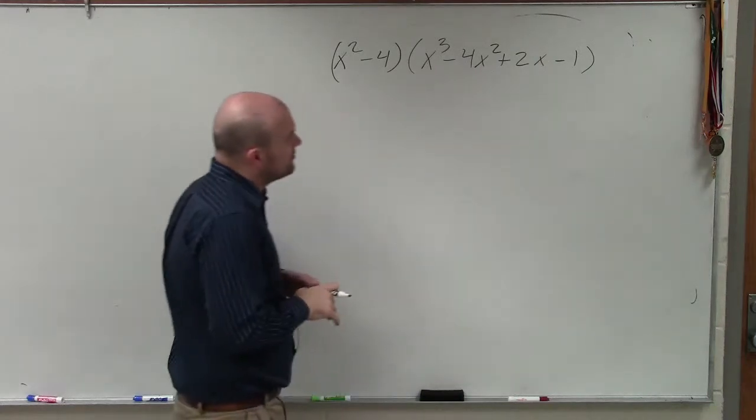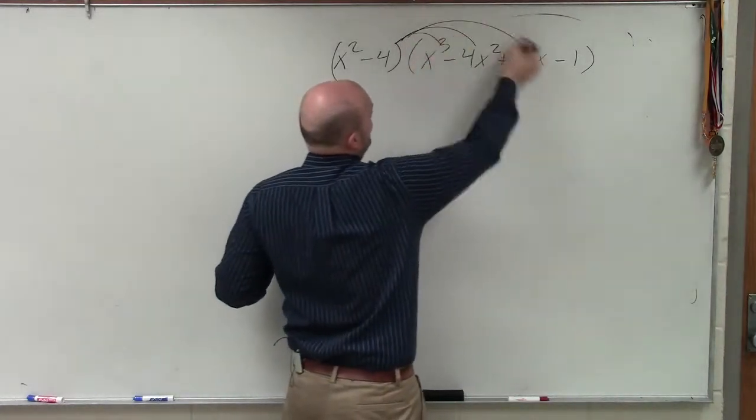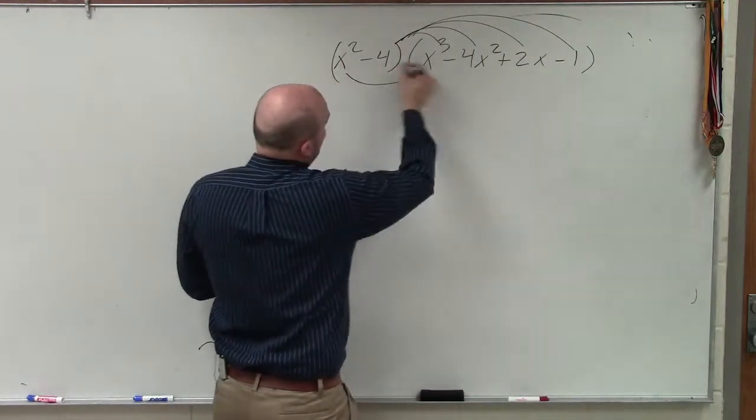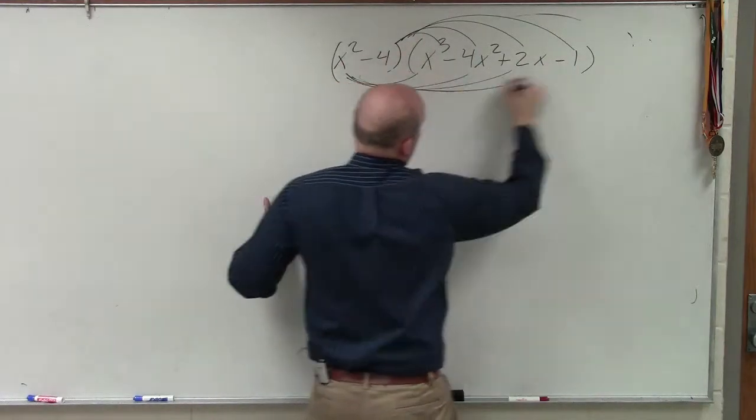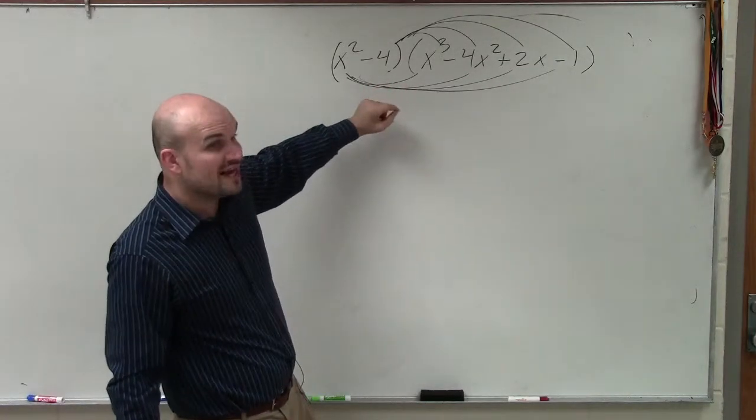So what I'm going to do, the way that I like to do this is obviously, as I just discussed, you can do this by applying distributed property. And then you'd have to do distributed property with the other term. And you guys can see, just look, counting all these lines, you're going to be doing the product, you're going to be multiplying,